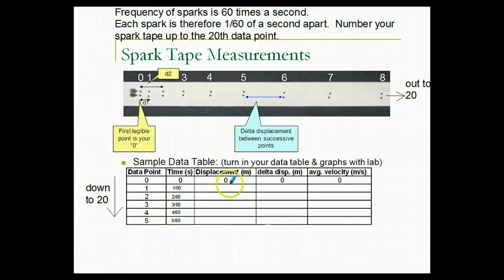Then, our displacement is a measurement from the zero point to the dot that corresponds to the data point. So the displacement for line one will be the distance D1, labeled in my diagram here, from zero to one. On line two, my displacement will be the distance from zero to two, and displacement for line three is the distance from zero to three. You'll measure this with a ruler.